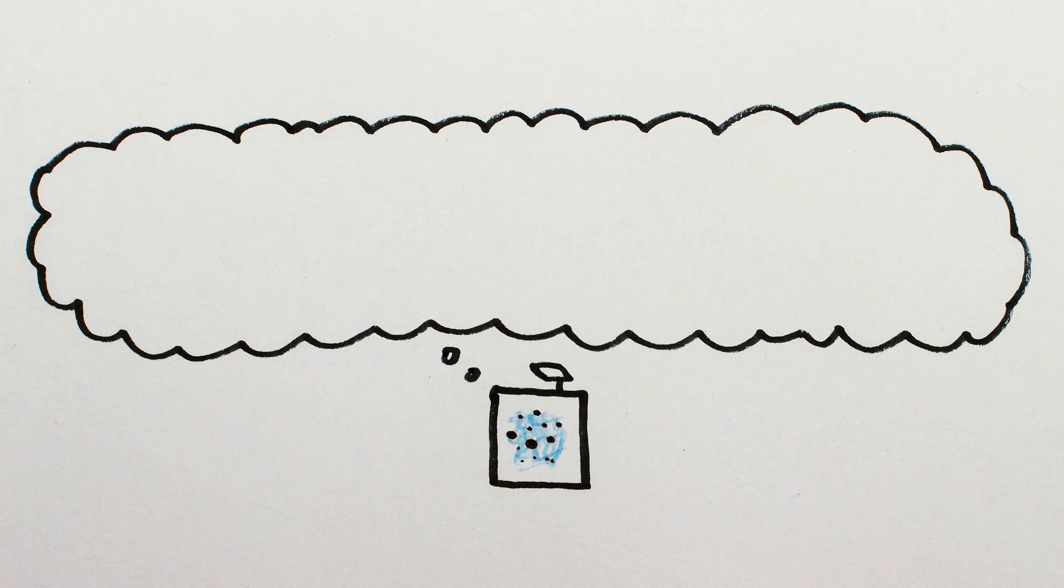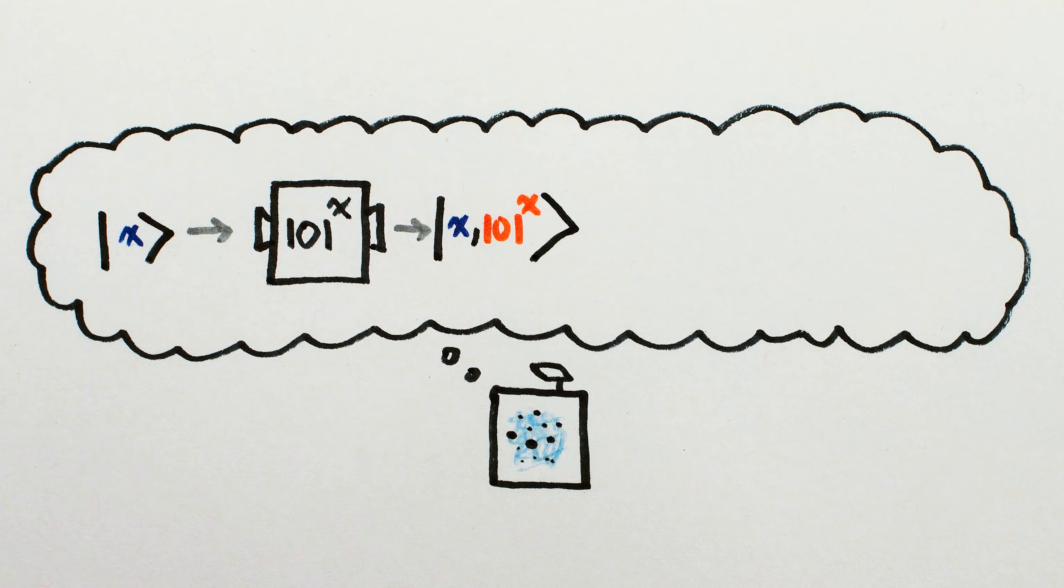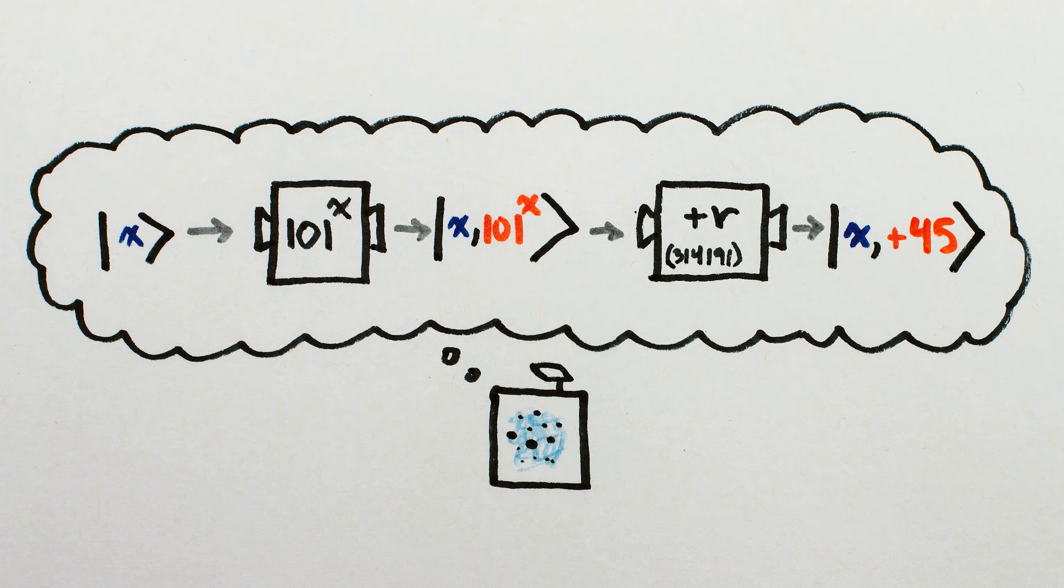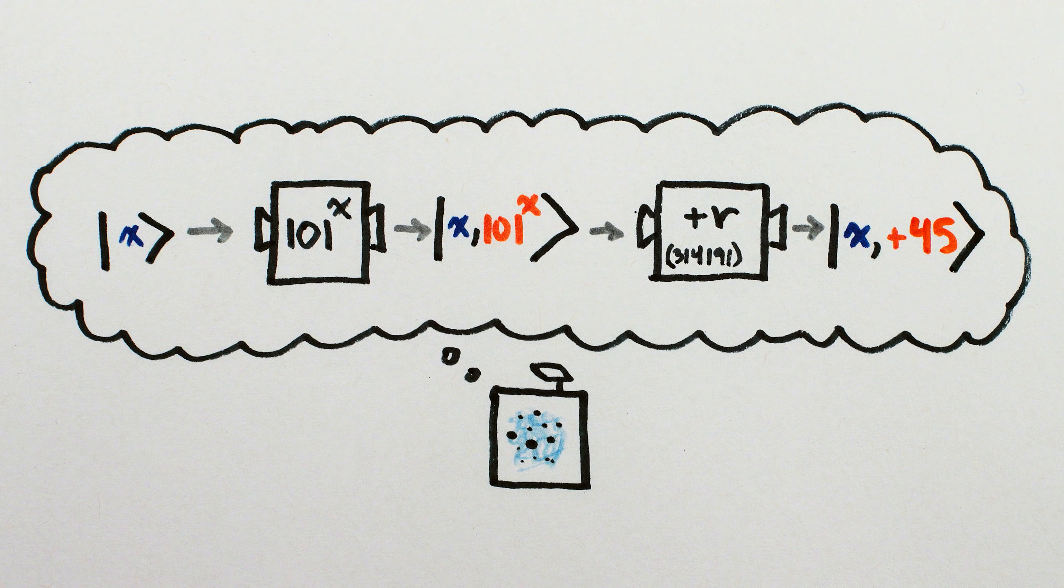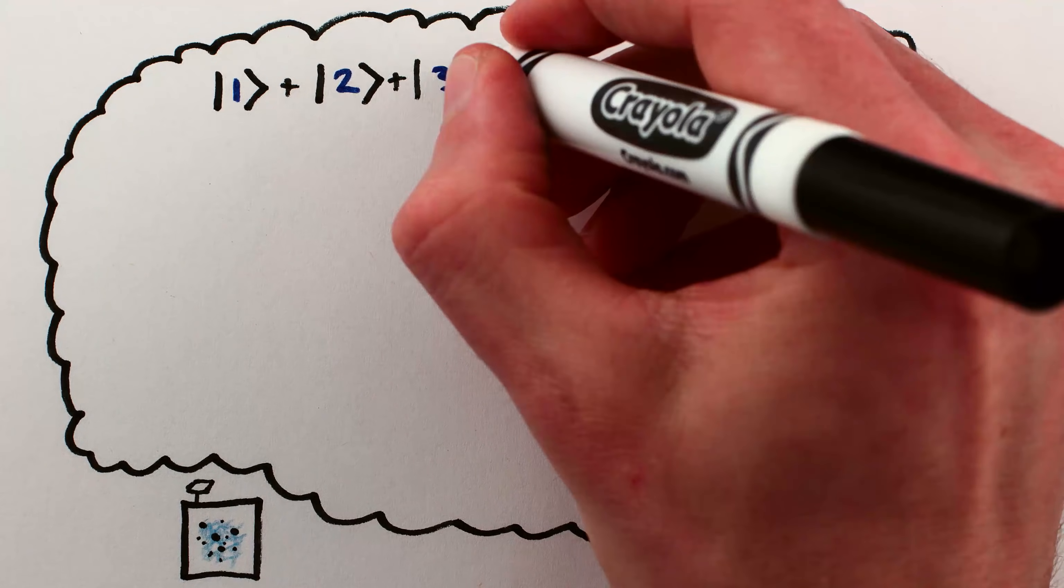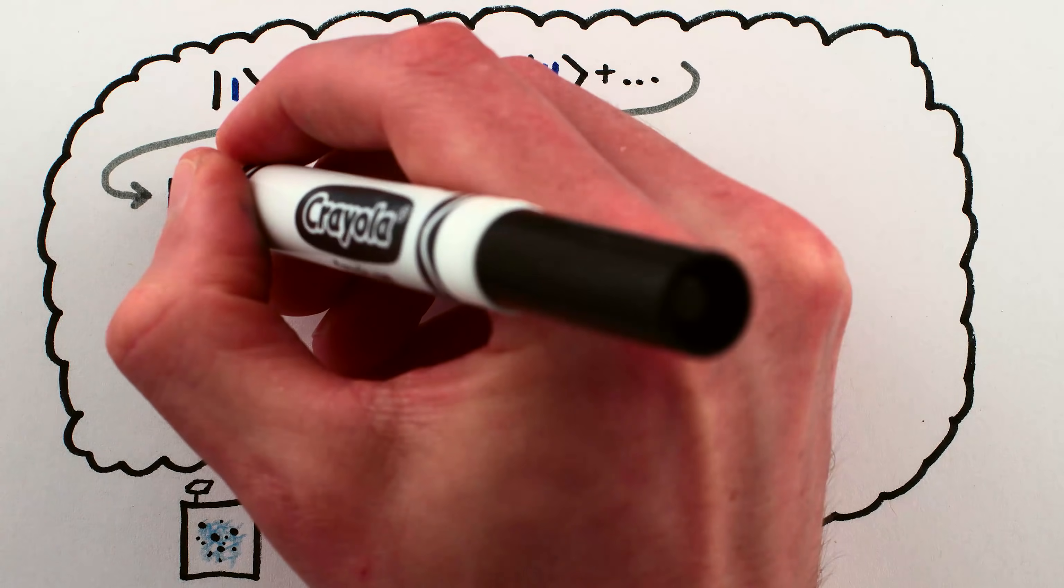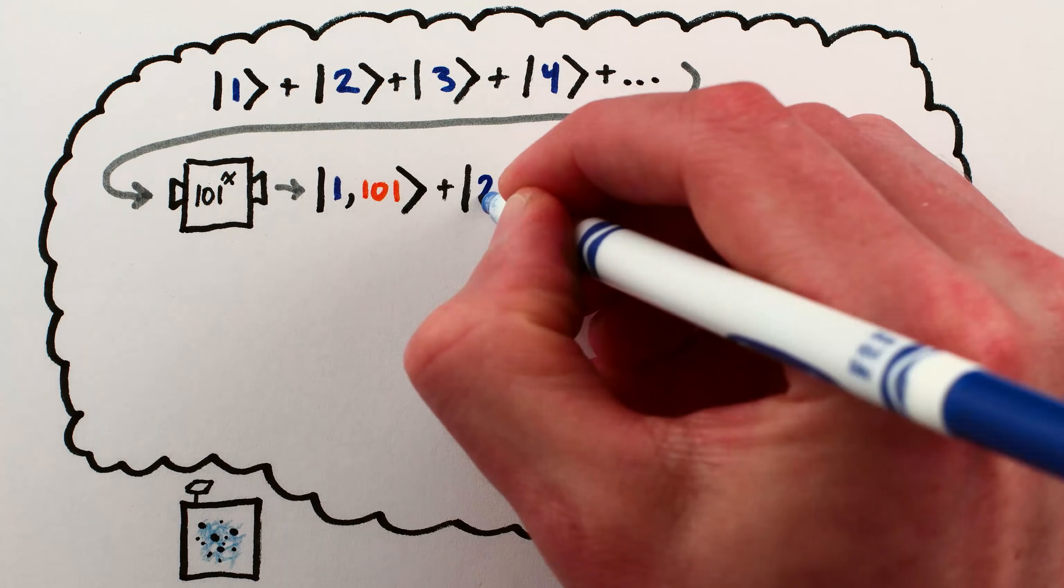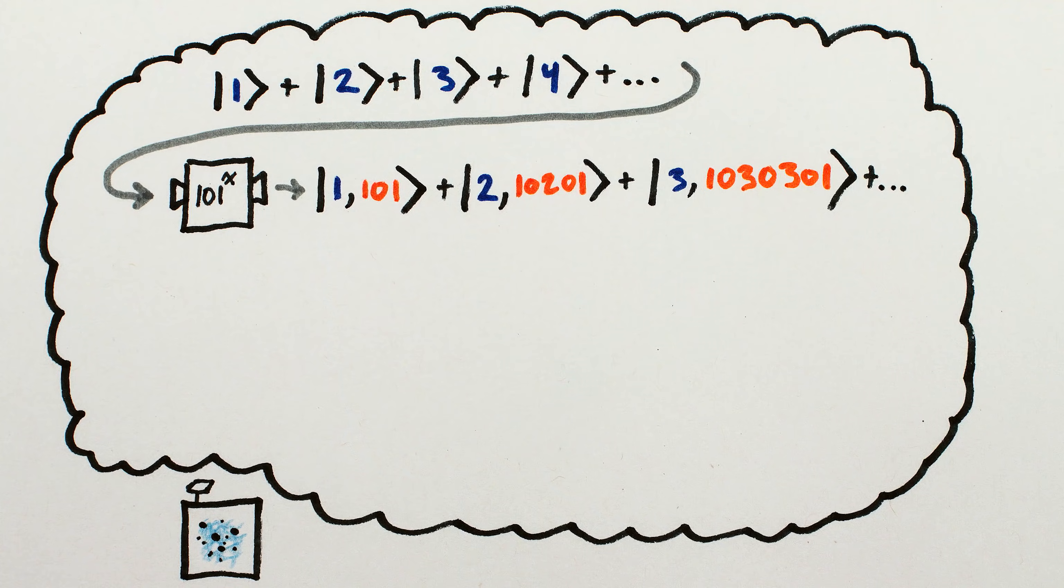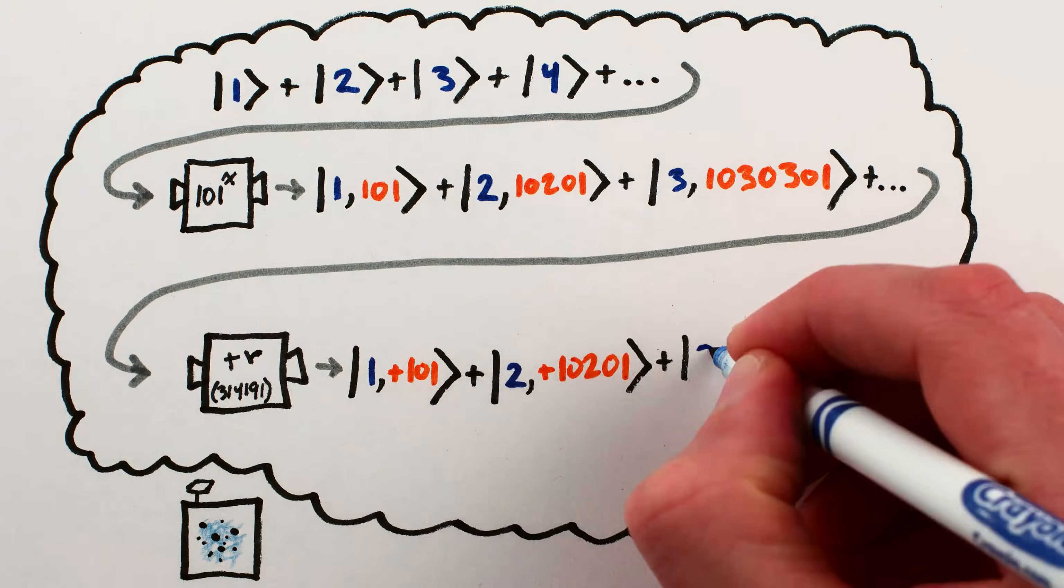This is where we use my quantum computer, which can raise 101 to any power, and calculate how much more that power is than a multiple of 314191. If we start with a superposition of all the numbers up to 314191, then the quantum computation will give us the superposition of 101, plus 101 squared, plus 101 cubed, and so on, and then the superposition of the remainders.